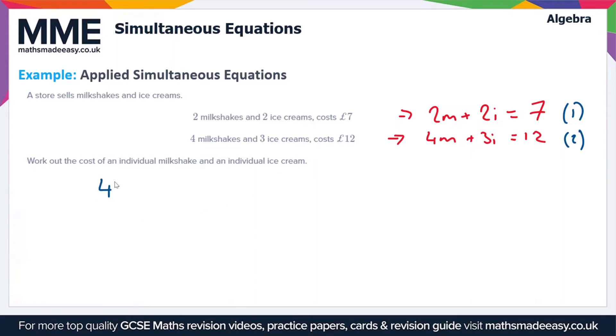If we multiply equation 1 times 2, let's call that 1 times 2, then we're going to get 4m plus 4i equals 14.